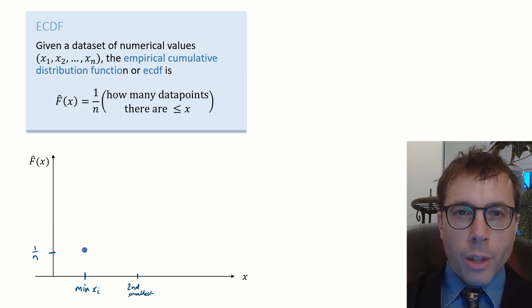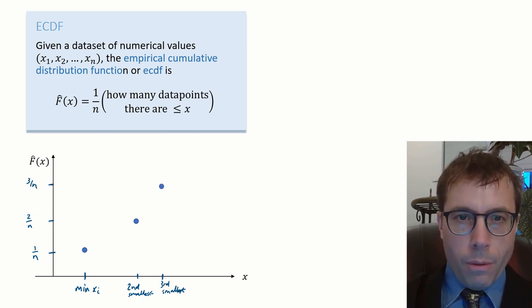How about when x equals the second smallest value in the data set? Same as before, now there are two points that are less than or equal to x, and so on and so on for the third smallest.